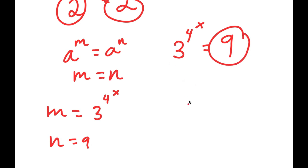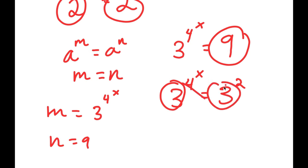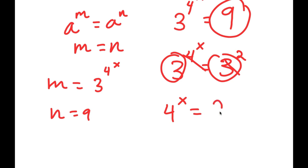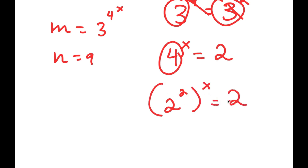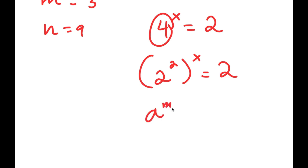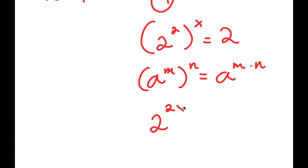Now 9 is the same thing as 3 squared. So I have 3 to the power of 4 to the power of x is equal to 3 squared. Again using this property, since both bases are the same, 4 to the power of x is equal to 2. Now 4 is the same thing as 2 squared, so I get 2 squared to the power of x is equal to 2. Using the power of a power rule — a to the power of m to the power of n equals a to the power of m times n — I get 2 to the power of 2x.